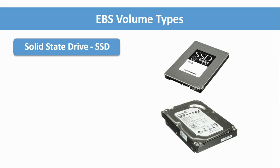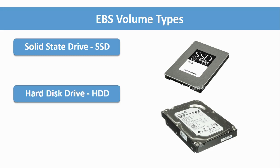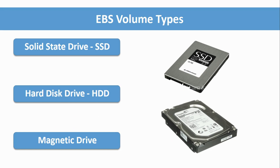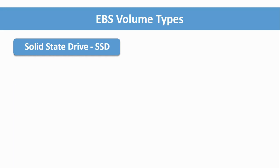There are some EBS volume types. The first one is Solid State Drive, which is SSD. Another one is Hard Disk Drive, HDD. And the last one is Magnetic Drive, which is an older generation that we can use for long-term backup storage.